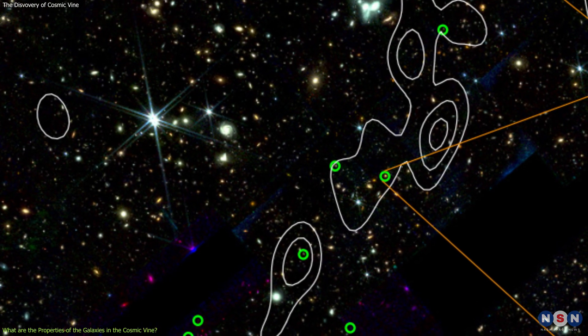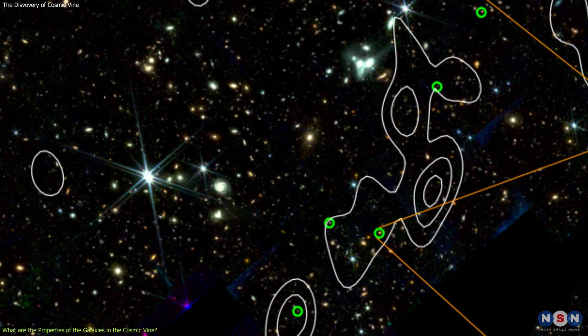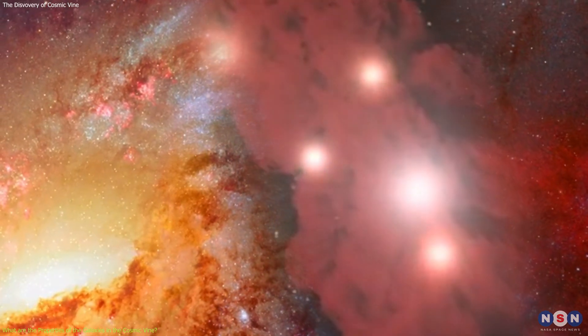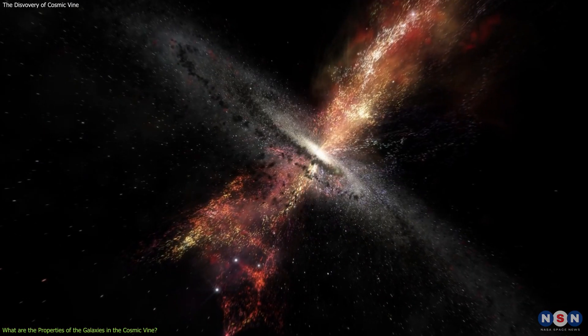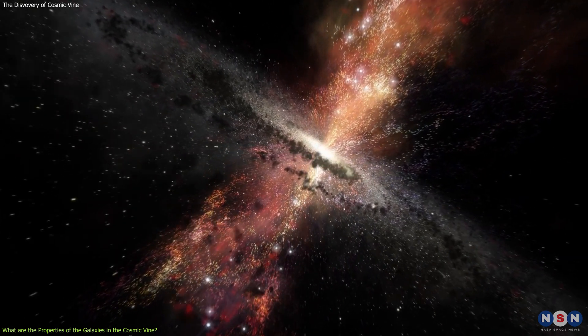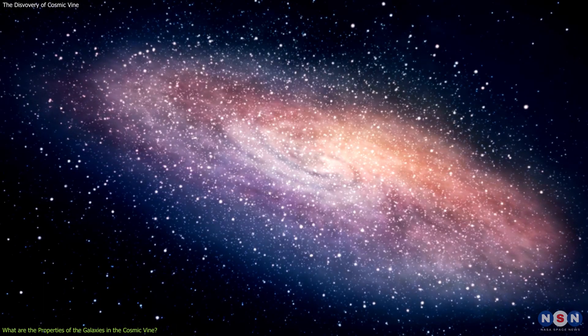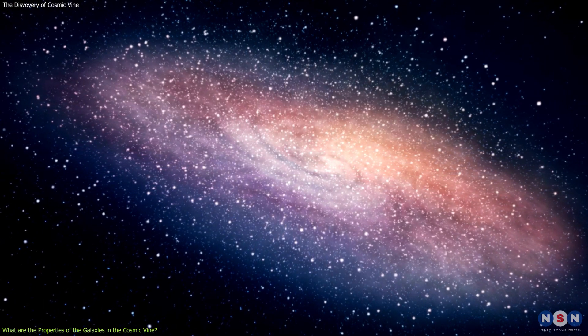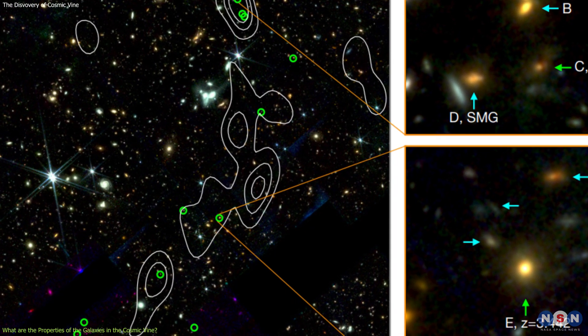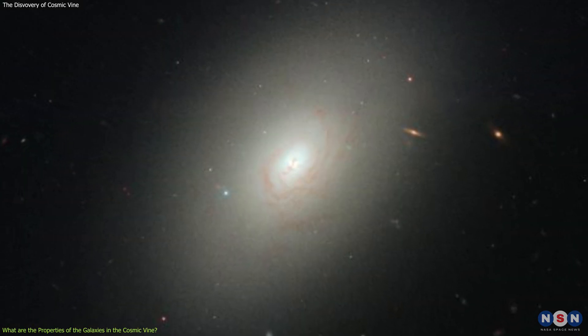The galaxies in the Cosmic Vine also have a wide range of star formation rates, from 0.1 to 100 solar masses per year. The star formation rate is the amount of mass that is converted into new stars in a galaxy per unit time, which is an indicator of how active and young the galaxy is. Some of the galaxies in the Cosmic Vine are forming stars at a very high rate, while others are quiescent.